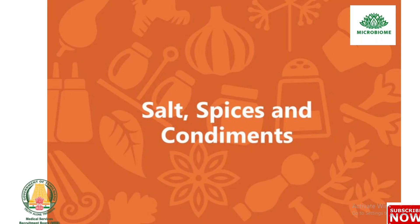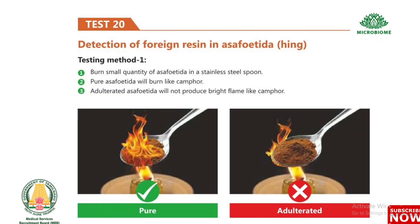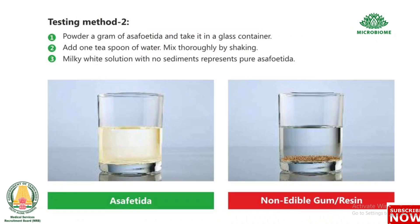Test 20: Detection of foreign resin in asafoetida (hing). Method 1: Burn a small quantity of asafoetida in a stainless steel spoon. Pure asafoetida will burn like camphor. Adulterated asafoetida will not produce a bright flame like camphor. Method 2: Powder a gram of asafoetida, take it in a glass container, add 1 teaspoon of water, and mix thoroughly by shaking. A milky white solution with no sediments represents pure asafoetida.